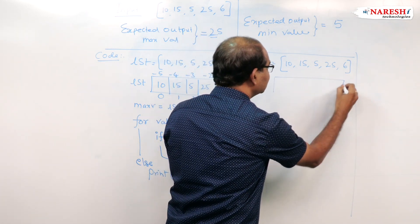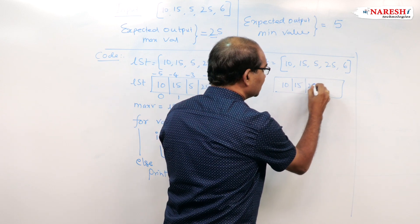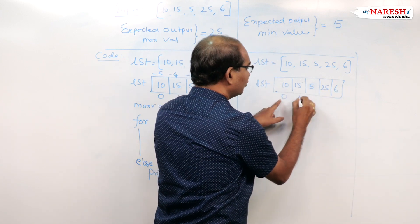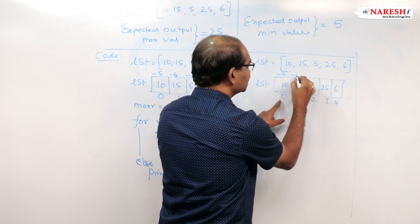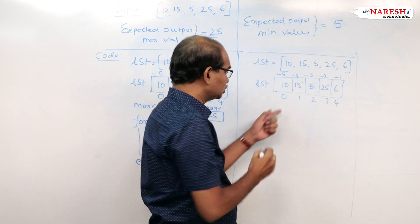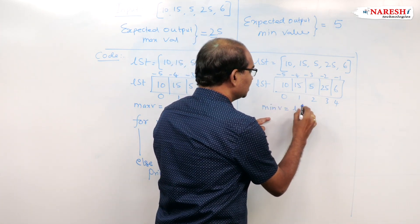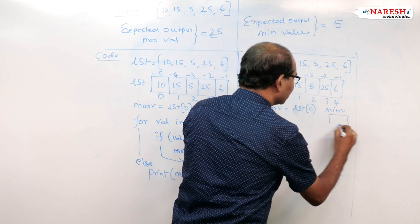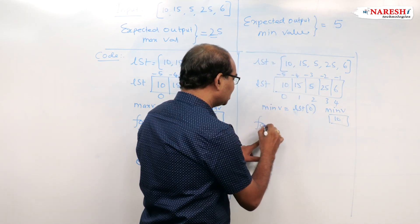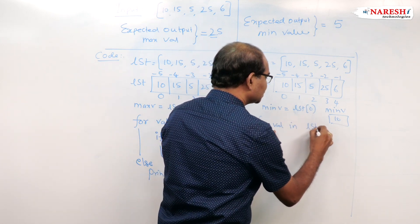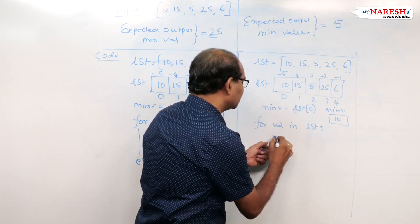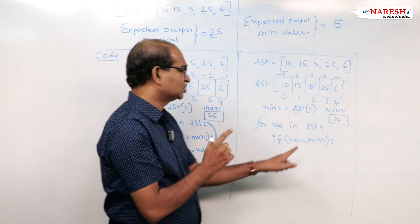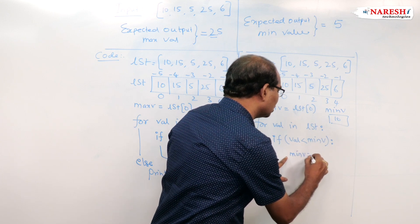I am taking the memory management the same: 10, 15, 5, 25, and 6. LST indices: 0, 1, 2, 3, 4 and -5, -4, -3, -2, -1. I initialize min_v equal to LST[0], which is 10. For value in LST: if value less than min_v — unlike max where it was greater, here it is lesser — I will update min_v equal to value.